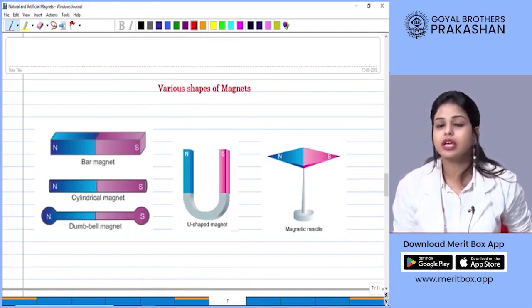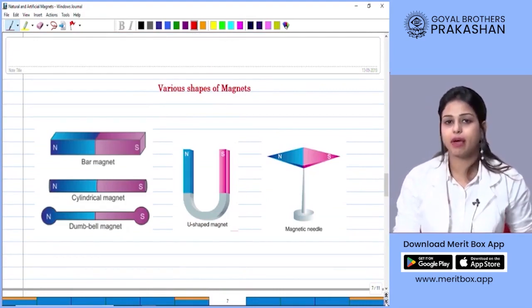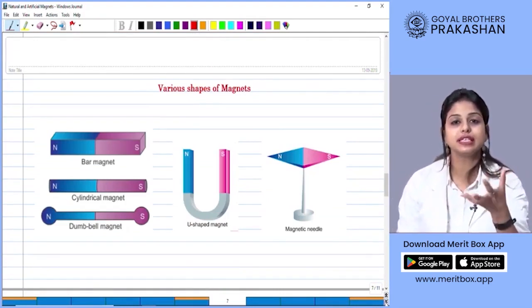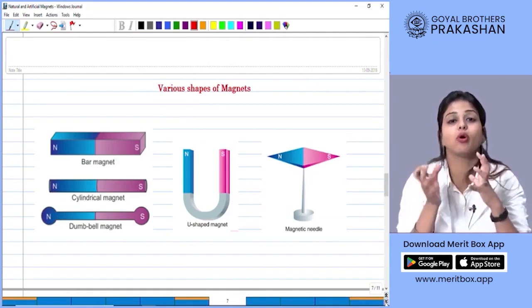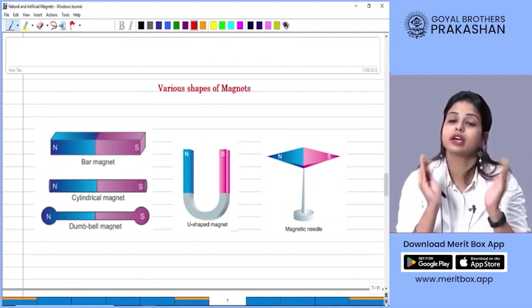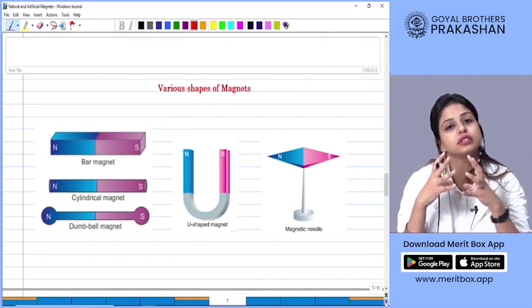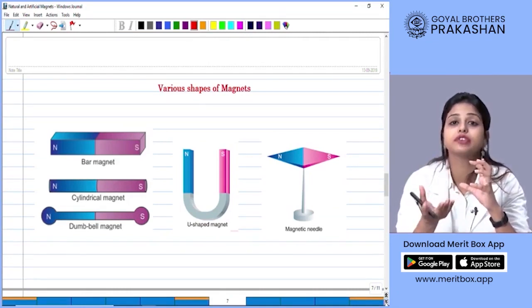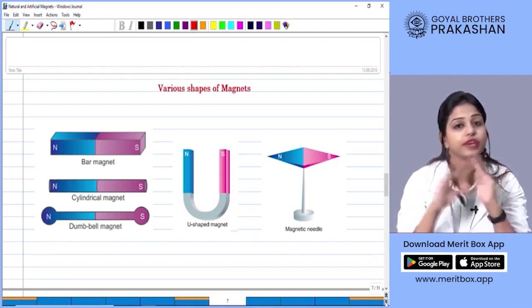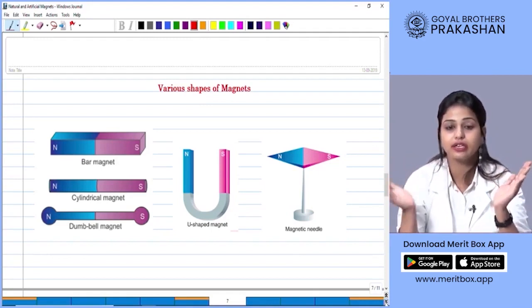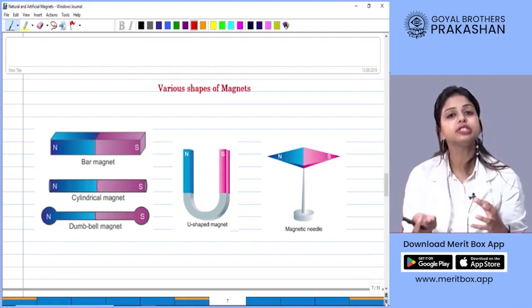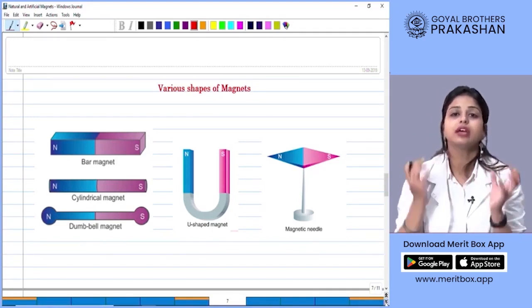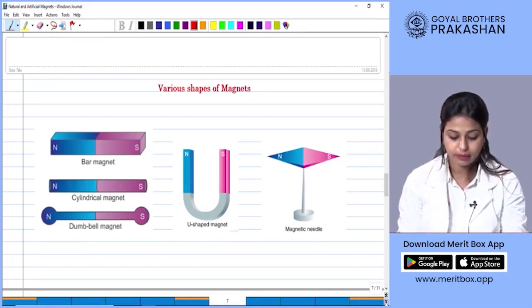Now there are various shapes of a magnet. We had already seen that magnetite was a stone. It was the ore, right? So it occurs naturally in the form of a stone. But when we construct magnets, when we make artificial magnets, we can make various shapes for the magnets. So here are some of the common shapes that you find in the market in which magnets are available.